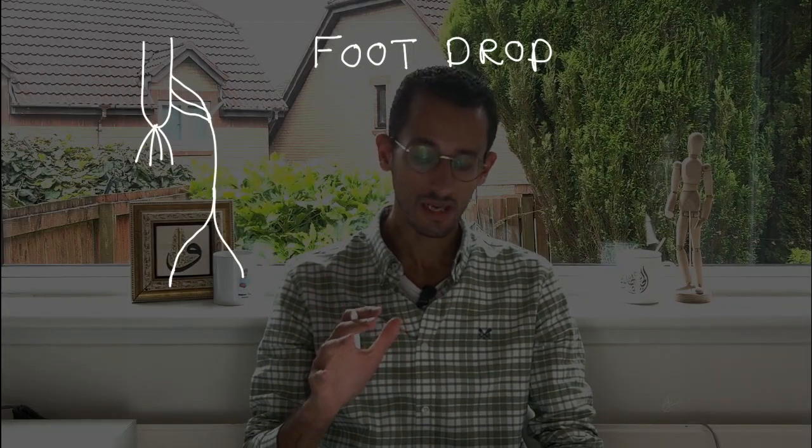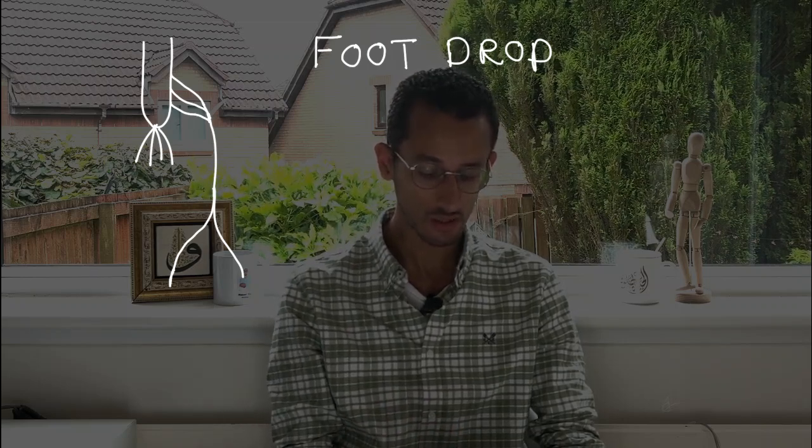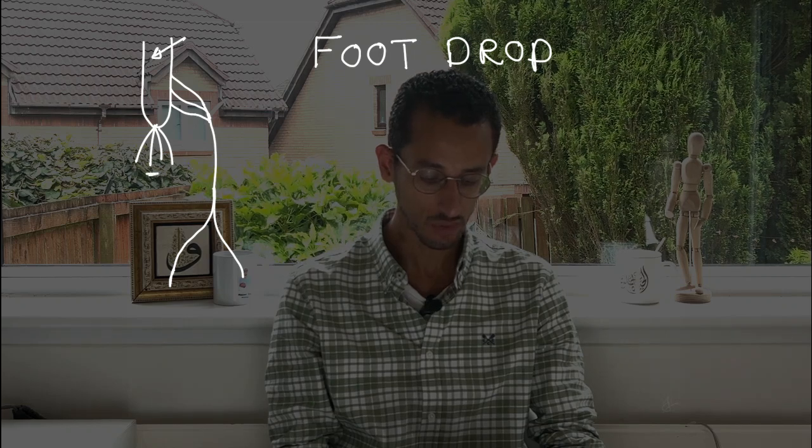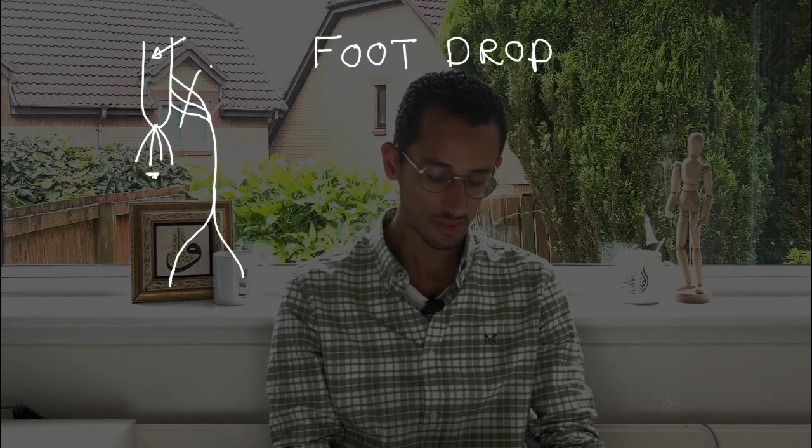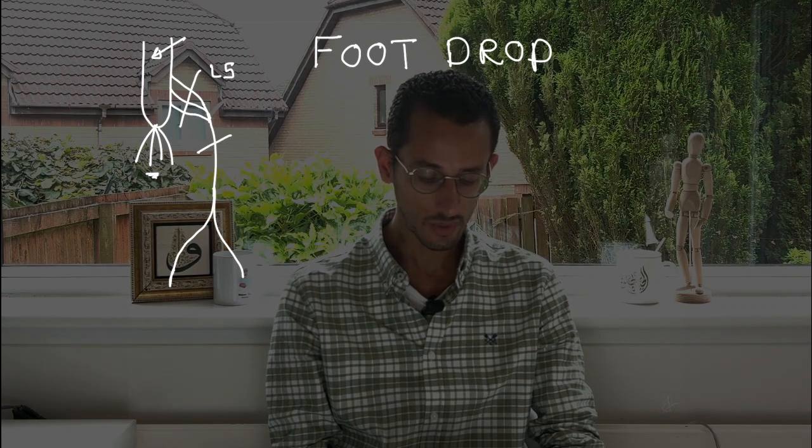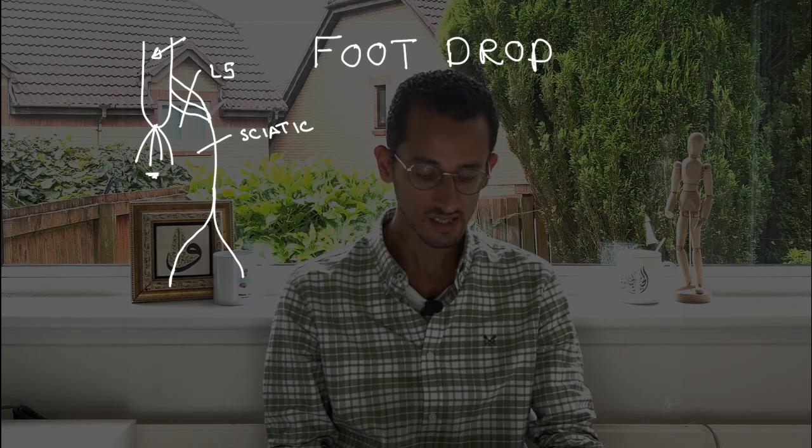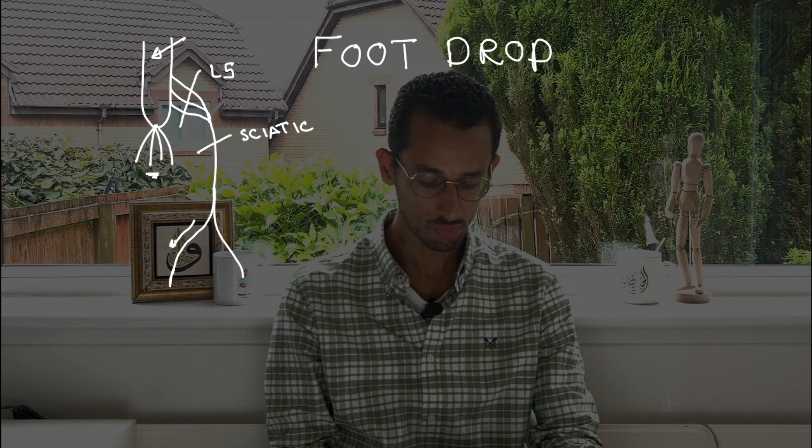All right, so to talk about foot drop, as you can see in this picture, what we have here is the spinal cord that ends up into the cauda equina down here. And what we have coming up at this one is the L5 nerve root, and here we have the sciatic nerve. The sciatic nerve will then divide into two branches.